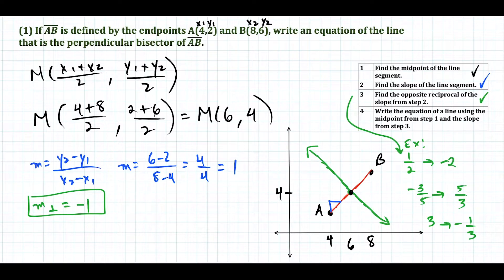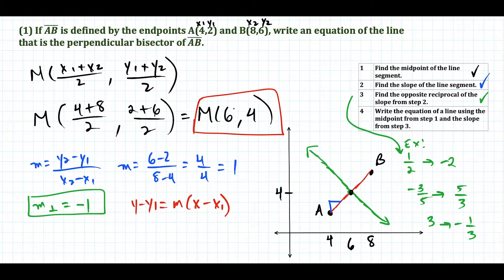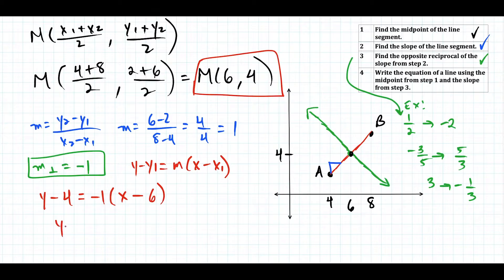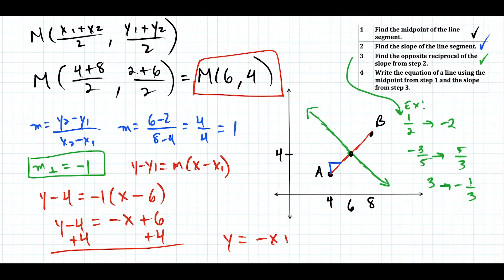Now we write the equation of the line using point-slope form: y - y₁ = m(x - x₁), using the midpoint (6, 4) and perpendicular slope -1. So we have y - 4 = -1(x - 6). Distributing: y - 4 = -x + 6. Adding 4 to both sides, the equation of our perpendicular bisector is y = -x + 10.